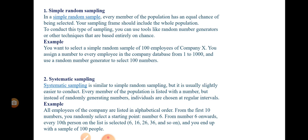For example, you want to select a random sample of 100 employees from Company X. You assign a number to every employee in the company database, from 1 to 1000. Then you use a random number generator to select 100 numbers. Whichever numbers are selected, those employees are chosen — completely randomly. This is how simple random sampling works, similar to the dance competition example.